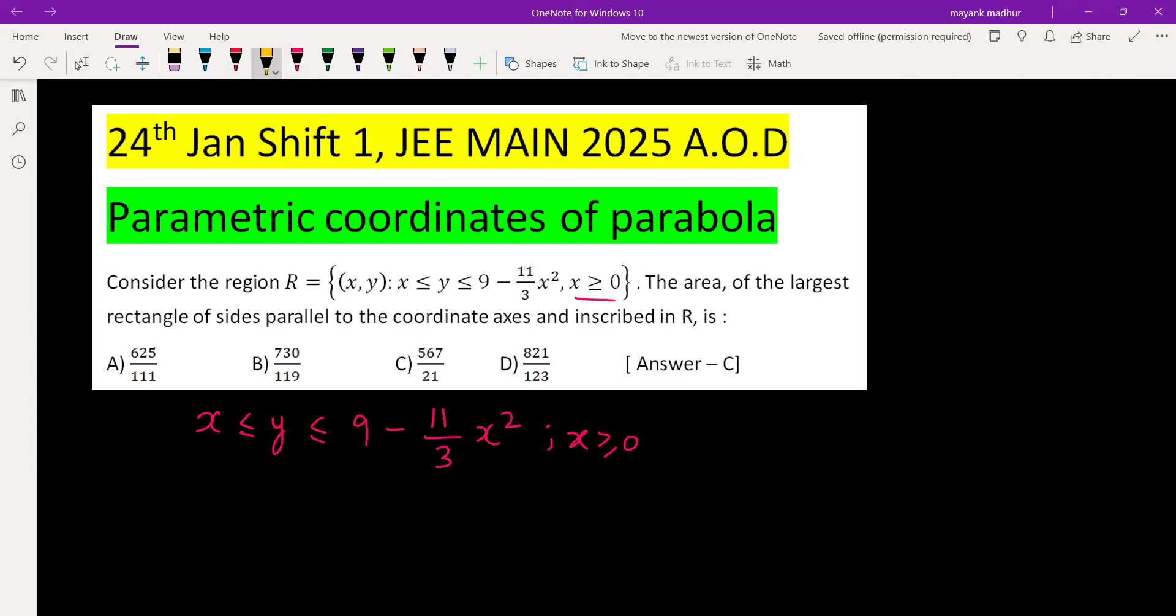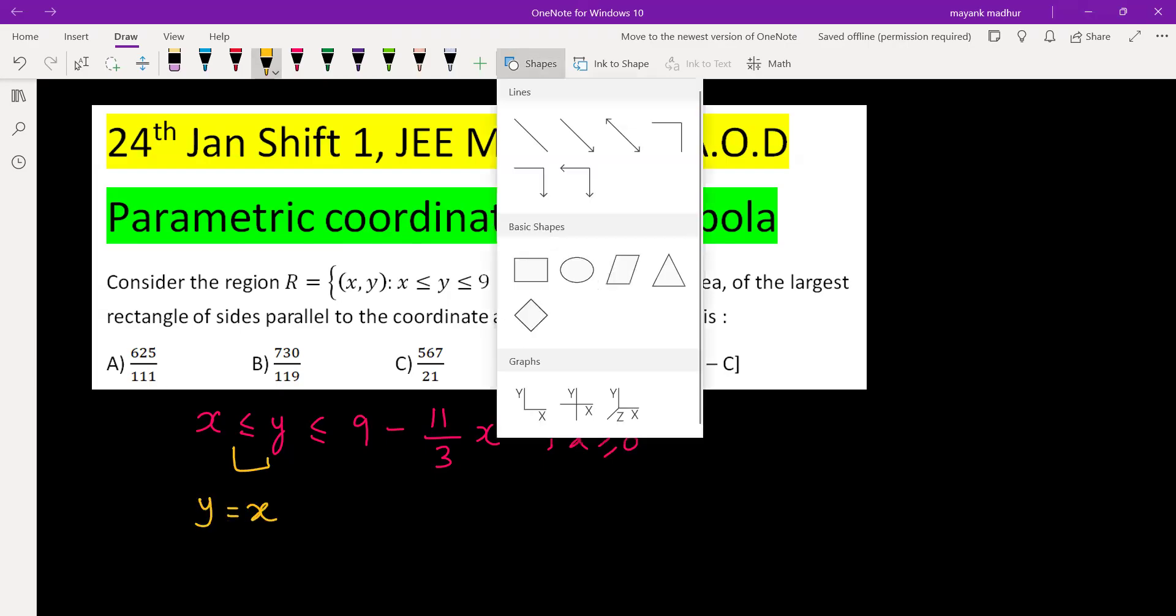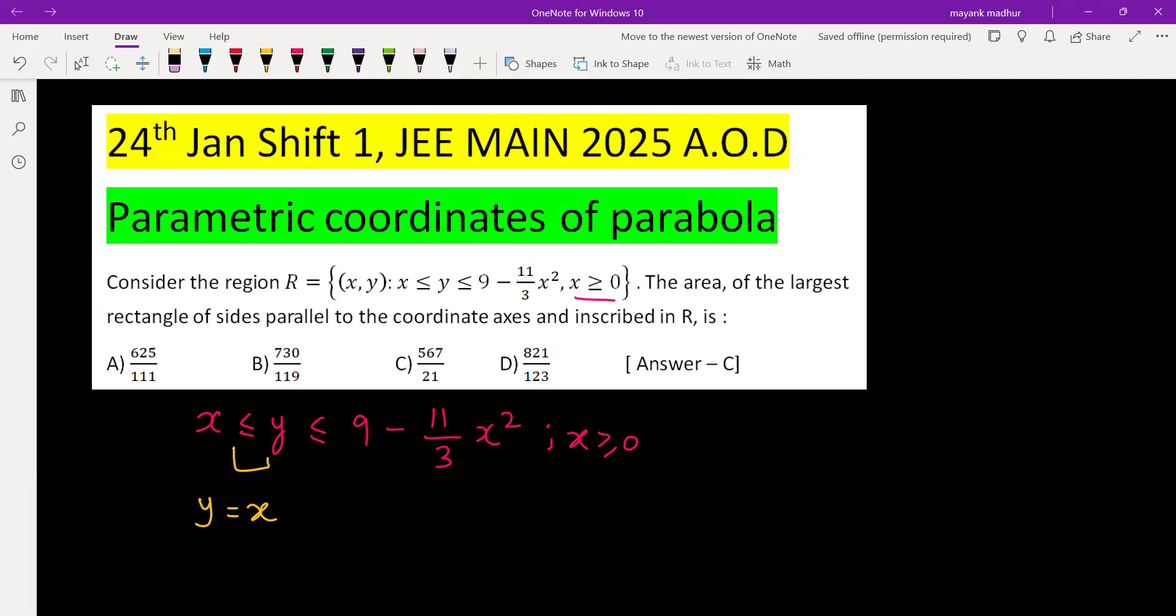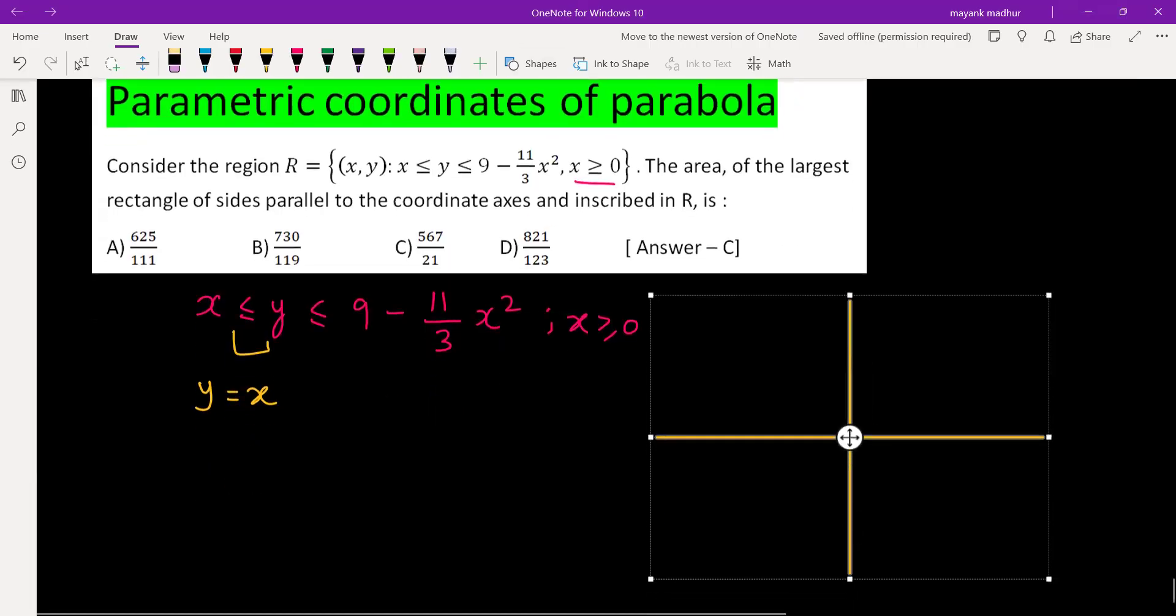So the first one is y equal to x, the boundary line is y equal to x which will be a straight line, and the second one is y equal to 9 minus 11 by 3 x square which will be a downward parabola.